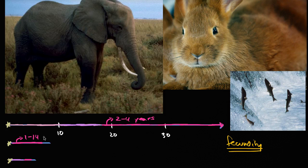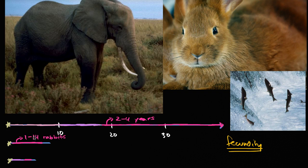The numbers I found were one to 14 rabbits. And not only can they have one to 14 rabbits every time they have a litter, but they can do this on the order of once a month. Every month.